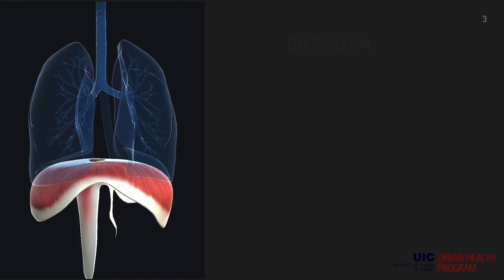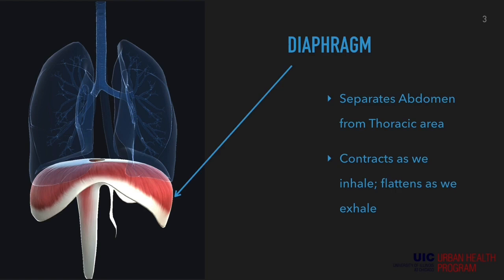Right here we have the diaphragm. The diaphragm separates the abdomen from the thoracic area. It contracts as we inhale and flattens as we exhale.